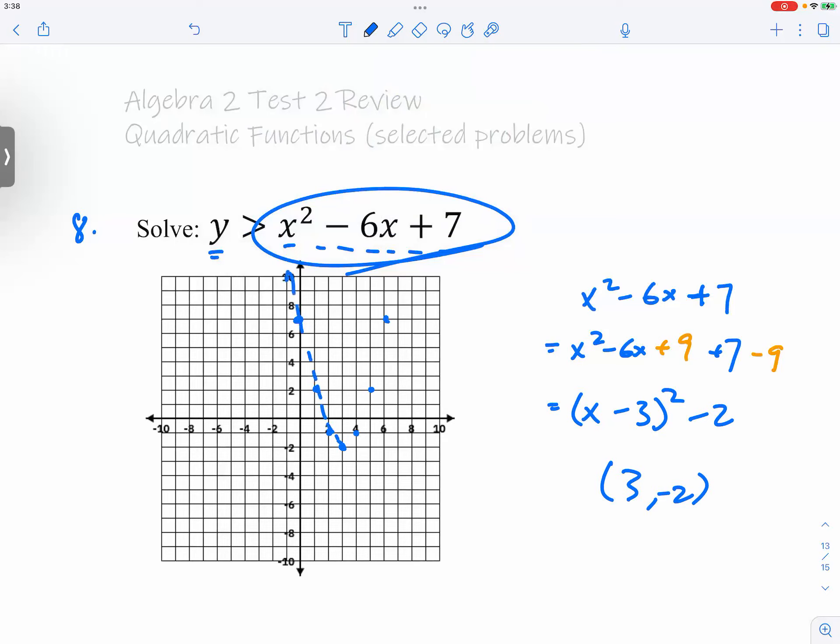So when things are not going your way in terms of factoring, make sure you can do something else, and that is to find the vertex. Then you have your graph and you will shade the region above the line because y is greater than. That's it.